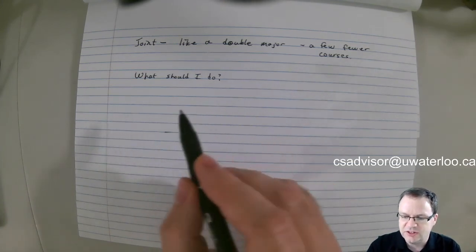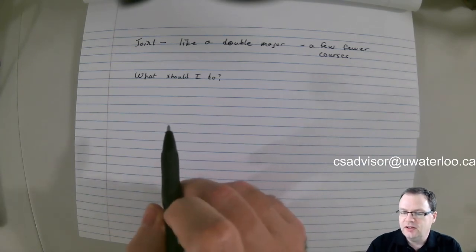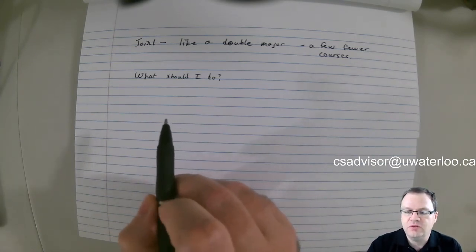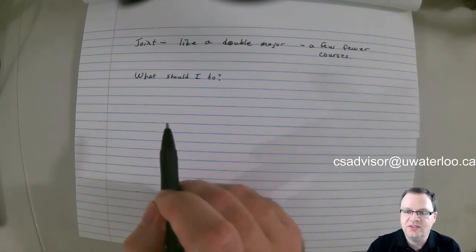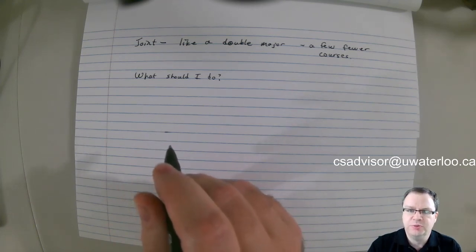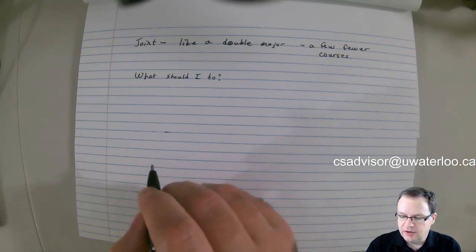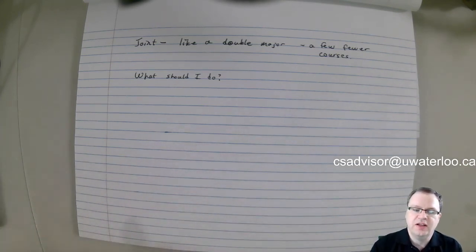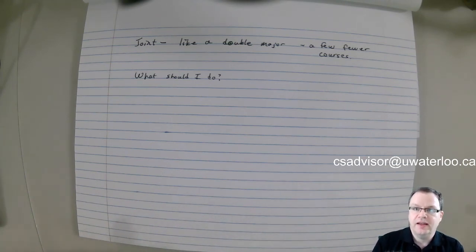So what should I do? Do an option if it's truly interesting to you. If it turns out that what you want is just a plain BCS or BMath CS, it's a fine degree and there's nothing wrong with it — you should be proud of it. Do the options again only if they're interesting to you. Hopefully that clears up some of the questions you may have about the terminology around all of these plan components. If you have any other questions, you can contact us at the CS Advisor email address just above me. Thank you for your time.